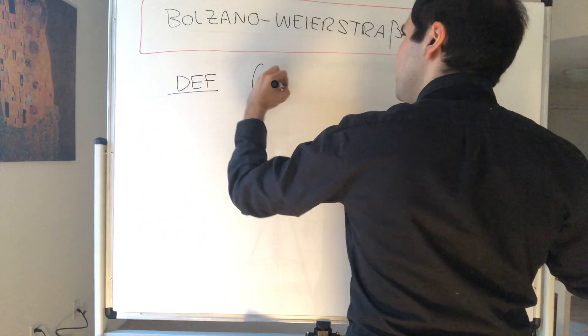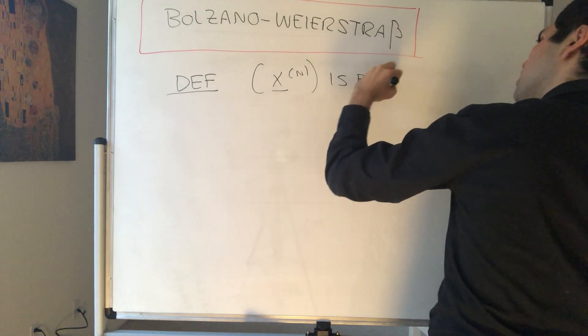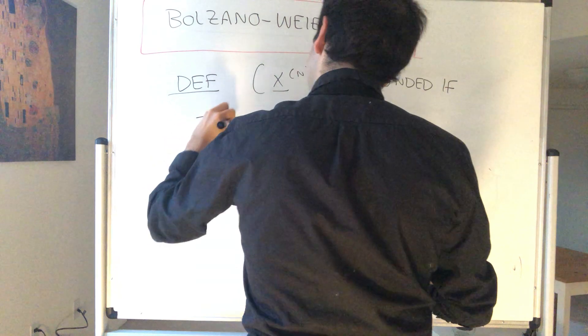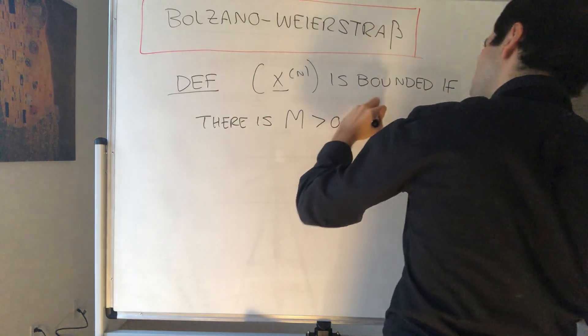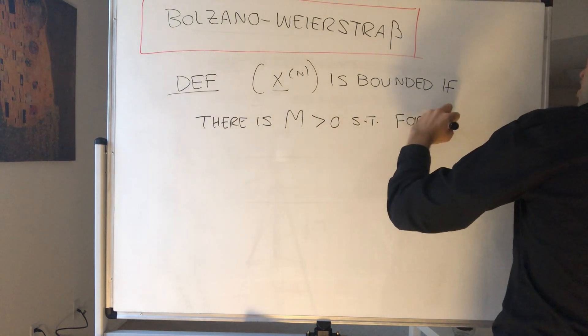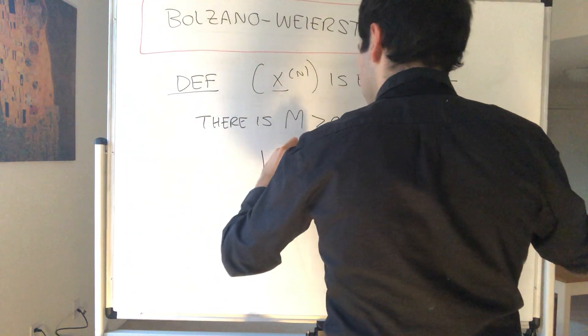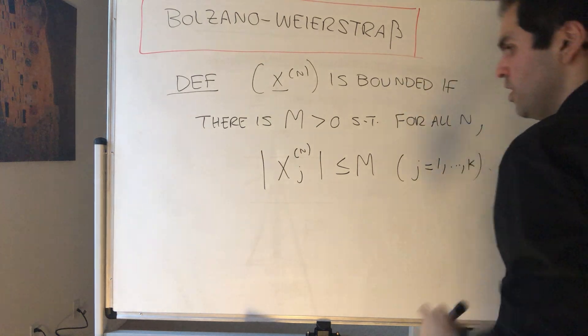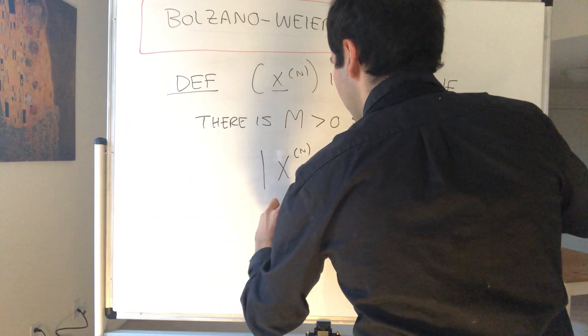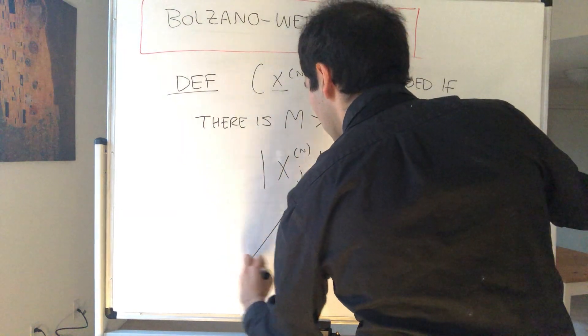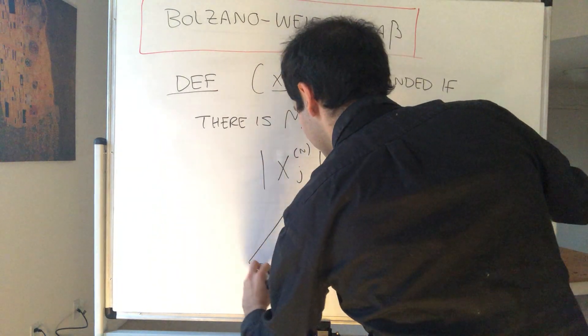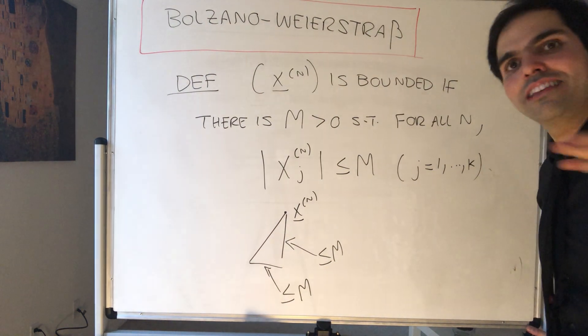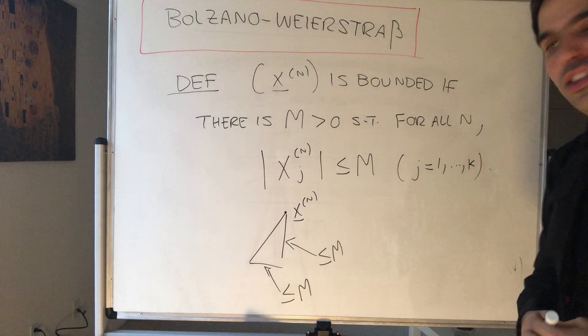In this case we say a sequence in R^k is bounded if essentially each component is bounded. So if there is capital M such that for all n we have that the jth component is bounded. So |X_nj| is less than or equal to M and that's for all j from 1 up to k. In other words, thinking of this in terms of a triangle, essentially all that this says is that each leg of the triangle is less than or equal to M. And in fact you can show that bounded sequences must be in a box, but that's not why we're here for. We're here to prove the Bolzano-Weierstrass theorem.